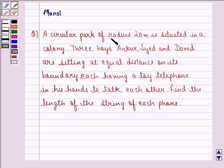a circular park of radius 20 meter is situated in a colony. Three boys, Ankur, Syed and David are sitting at equal distance on its boundary, each having a toy telephone in his hands to talk to each other. Find the length of the string of each phone.